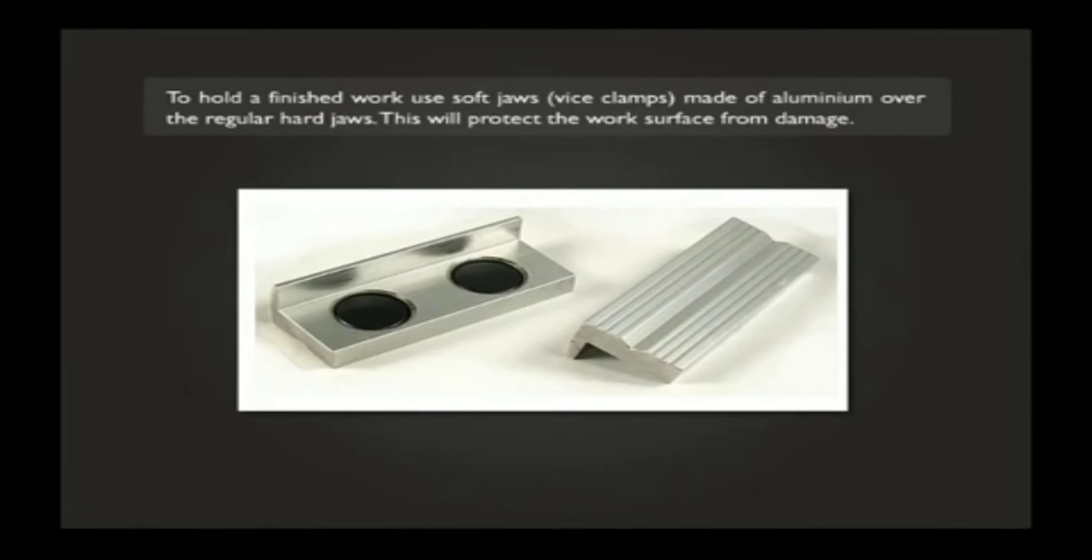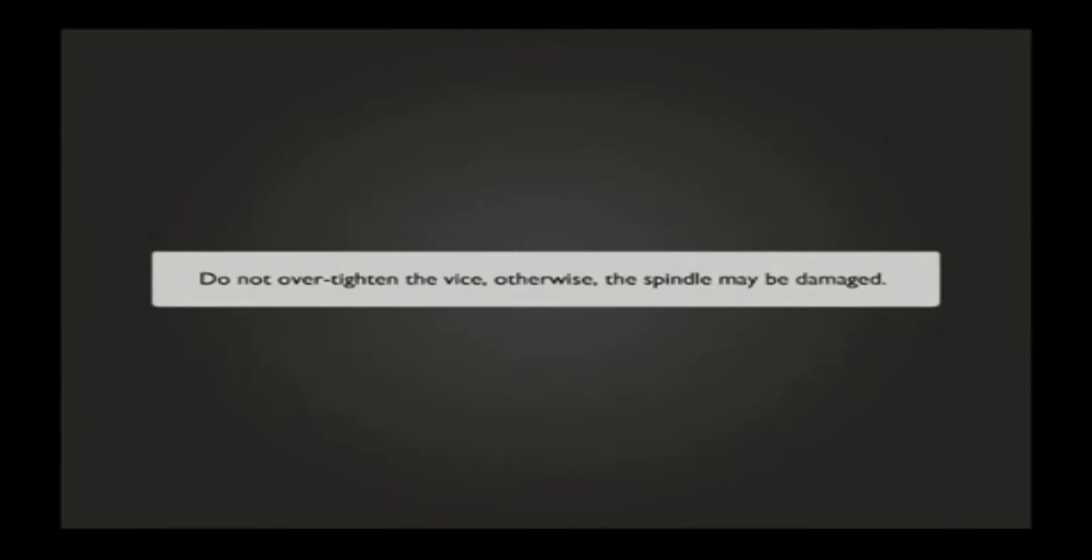To hold a finished work, use soft jaws, vise clamps made of aluminium over the regular hard jaws. This will protect the work surface from damage. Do not over tighten the vise. Otherwise, the spindle may be damaged.